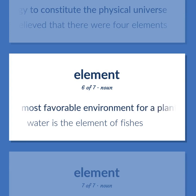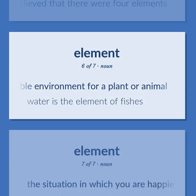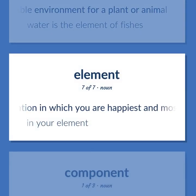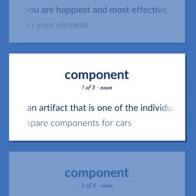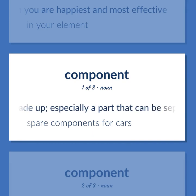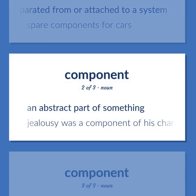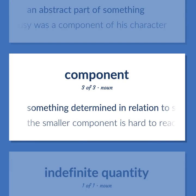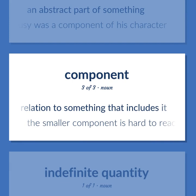Element: The most favorable environment for a plant or animal. Example: Water is the element of fishes. The situation in which you are happiest and most effective; in your element. Component: An artifact that is one of the individual parts of which a composite entity is made up, especially a part that can be separated from or attached to a system. Example: Spare components for cars. An abstract part of something. Example: Jealousy was a component of his character. Something determined in relation to something that includes it. Example: The smaller component is hard to reach.